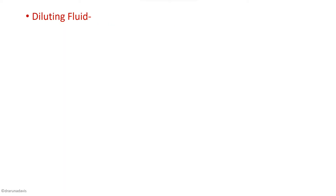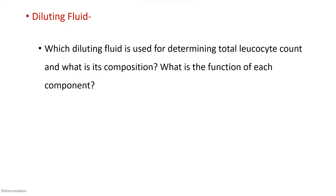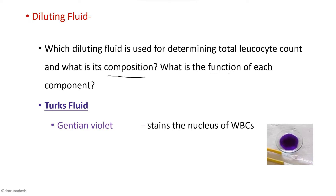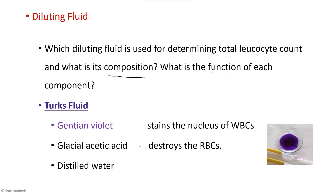Next, we can expect questions about the diluting fluid used. The diluting fluid used for WBC count is Turk's fluid. A favorite question will be: what is the composition of Turk's fluid and what is the function of each component? It contains gentian violet, which stains the nucleus of the WBC. It has glacial acetic acid, which destroys the RBCs. And it contains distilled water. These are the main constituents of Turk's fluid.